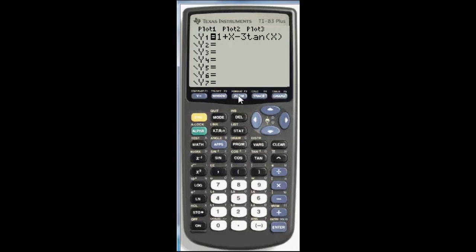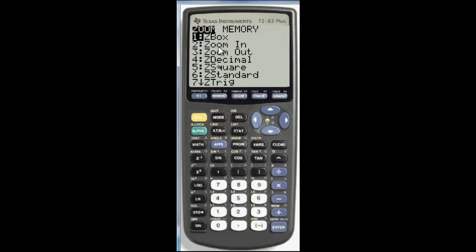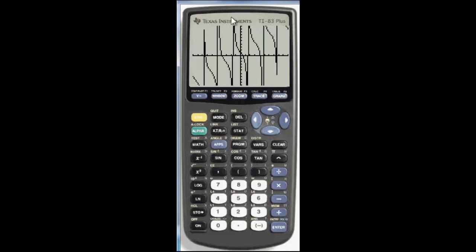Now, if you graph in the standard window, which would be zoom 6 if you don't already have it set to that, you get something that looks like this. Now, if you look in the directions, we're specifically wanting to find the zero of the function in the interval from 0 to 1. So, let's go ahead and focus in on that interval.